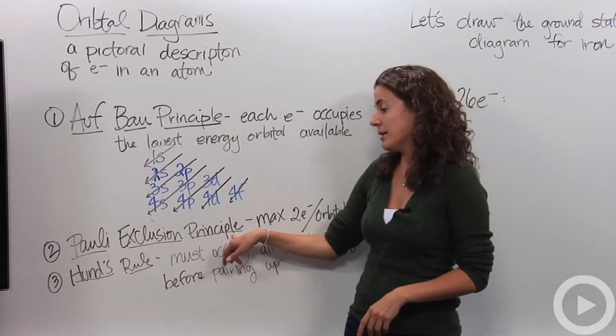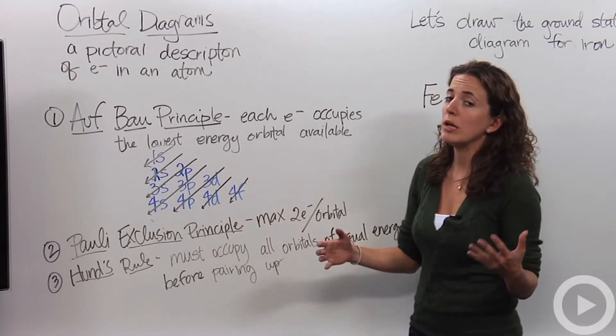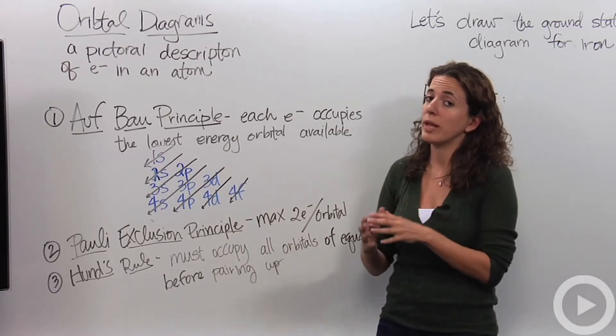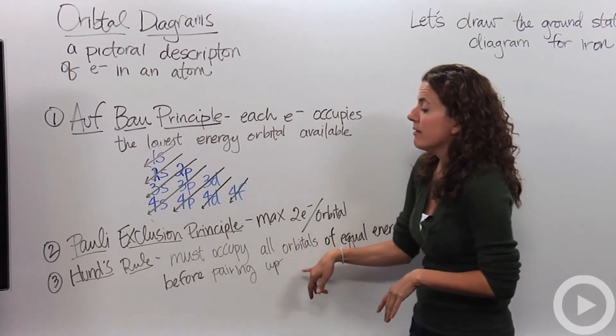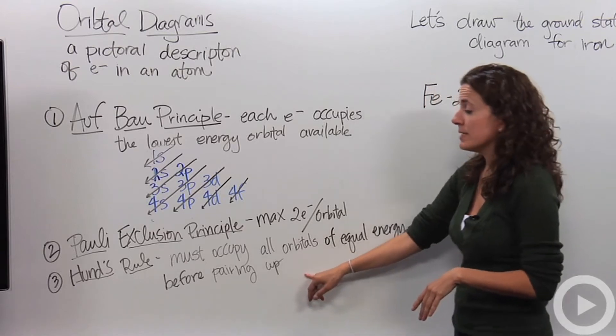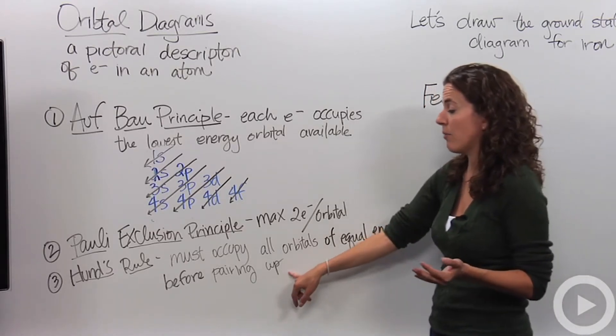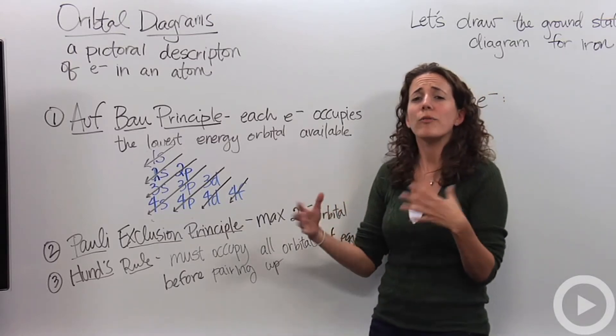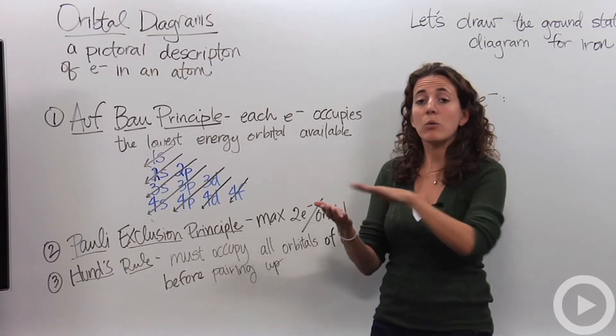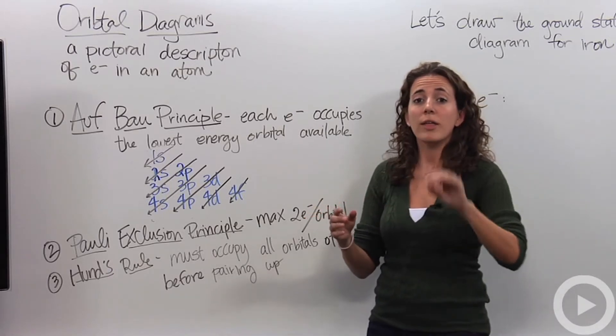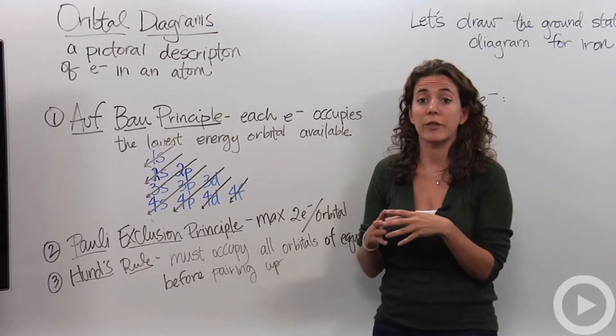The second rule that we're going to talk about is the Pauli exclusion principle, which basically states that the maximum is 2 electrons per orbital. So an orbital can only hold 2 electrons and that's it, no more. Lastly, Hund's rule states that they must occupy all orbitals of equal energy before pairing up. So just like electrons are both negative, they're all negatively charged, they're not going to want to be really close to each other. So if they're in equal energy, they're going to occupy all the energy levels of that same energy first before they pair up.